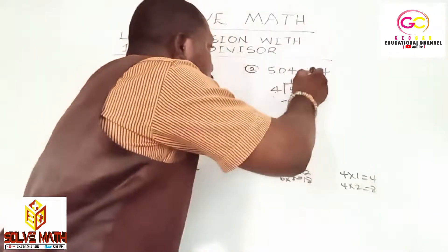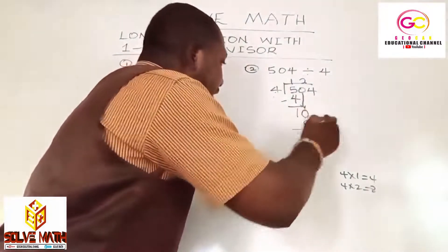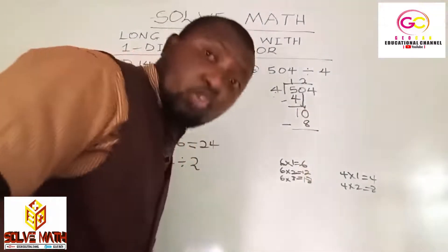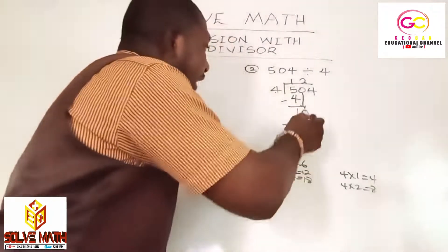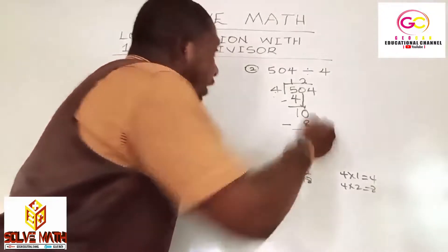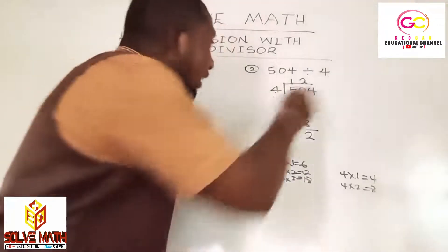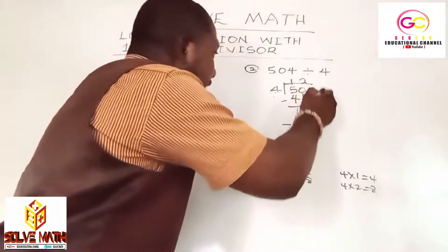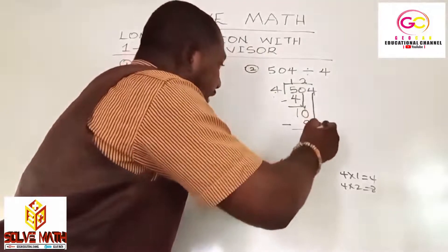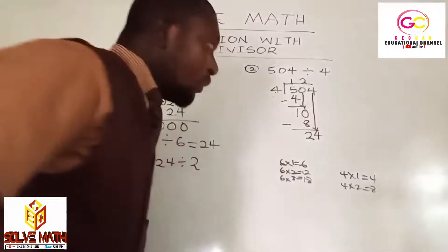So 4 times 2 is 8. Then you do your subtraction. You have 10 minus 8, which is 2. Easy as ABC. Are we done? No. The next digit is 4. Trace it and join it to your remainder, which is 2. So you have 24 now.